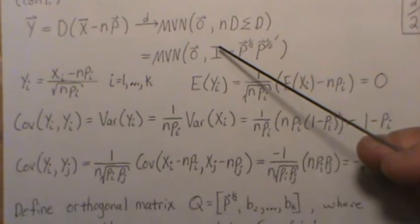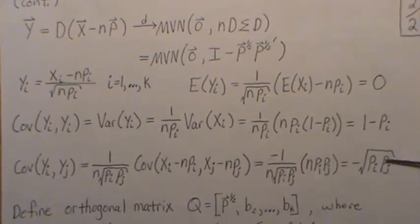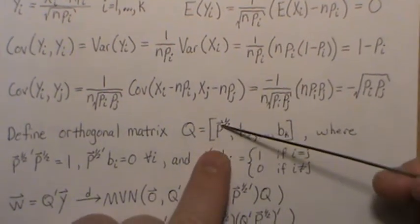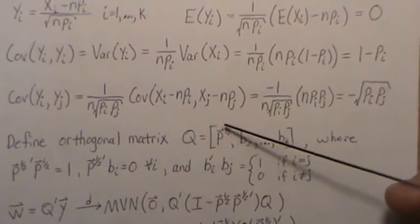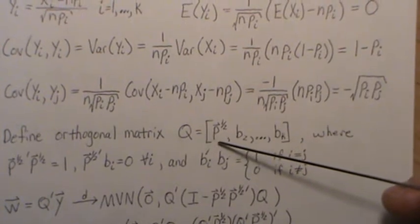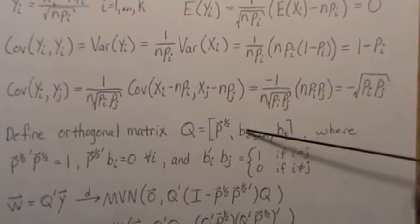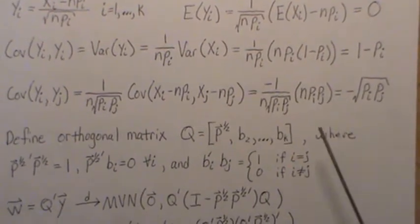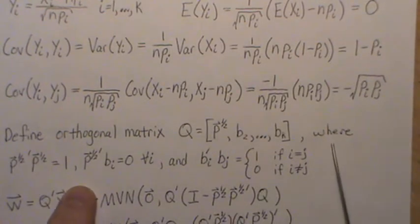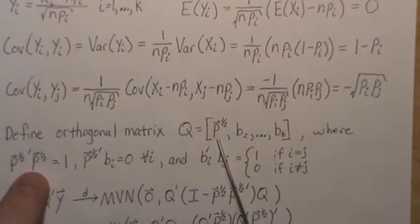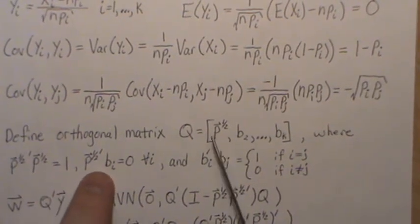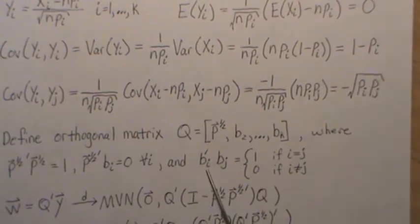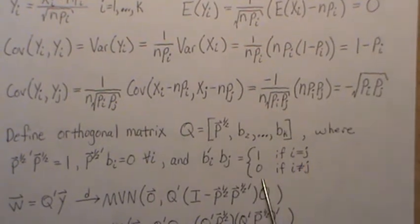Now define an orthogonal matrix Q whose first column is p^(1/2) — so the components are sqrt(p1), sqrt(p2), ..., sqrt(p_k). We construct the remaining k minus one columns (call them b vectors) to make Q a k-by-k orthogonal matrix. Note that (p^(1/2))^T * p^(1/2) = 1 (since the probabilities sum to one). Since Q is orthogonal, p^(1/2) dotted with any b vector is zero, and b_i^T * b_j equals 1 if i equals j, zero otherwise.